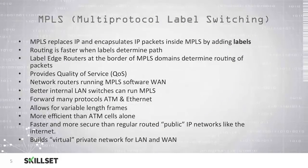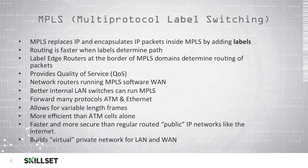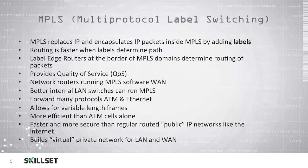Multi-protocol label switching, or MPLS, is able to replace Internet Protocol and encapsulate Internet Protocol packets inside MPLS by adding labels. This can allow routing to be done faster when the labels are able to determine the path that the data should take. MPLS uses label edge routers at the borders of your MPLS domains to determine the routing of packets. MPLS provides quality of service, or QoS, and network routers can run MPLS software on your wide area network.